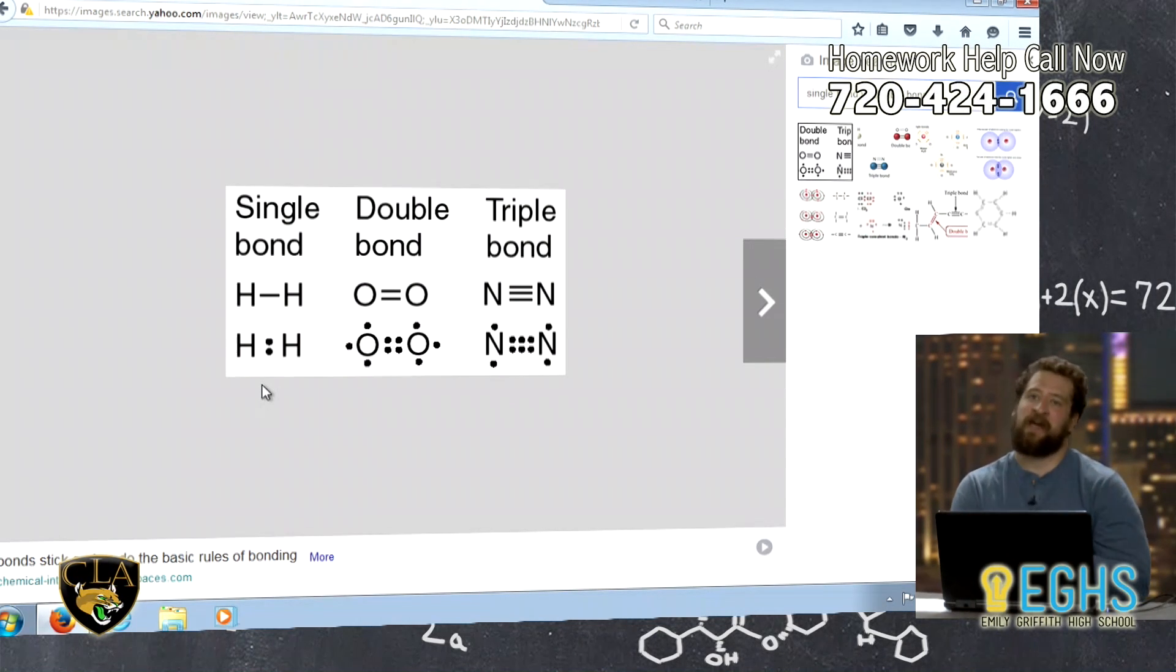Yeah, yeah. And that sharing is what bonds them together, what holds them together. In the case of a double bond, it's just that happening two times. So oxygen, O2, the gas that we breathe that allows us to live, is a double bonded chemical, or a double bonded molecule. So what we have here is two oxygen atoms, each of them sharing two electrons, for a total of four electrons shared all together. Do you see that in the image? Yeah, I do.